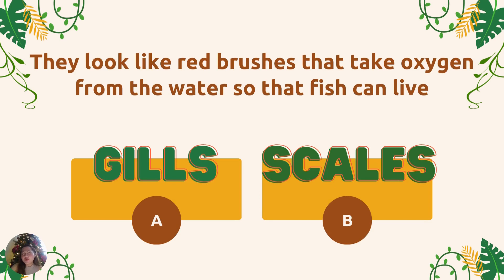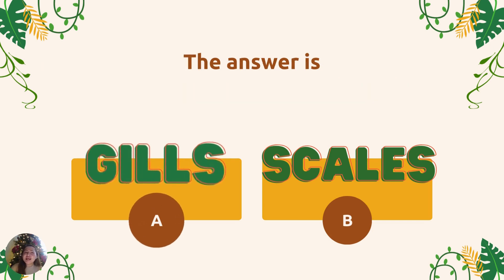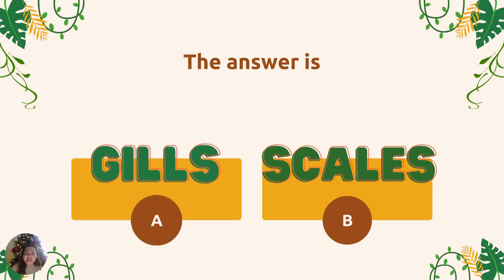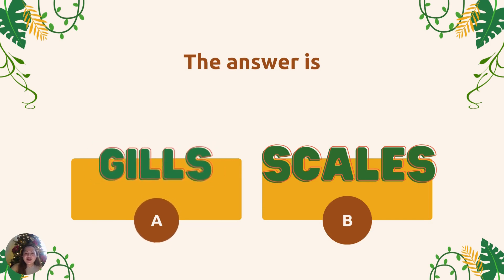They look like red brushes and take oxygen from the water so that the fish can live. Letter A, gills. Or Letter B, scales. And the answer is Letter A, gills. Good job!